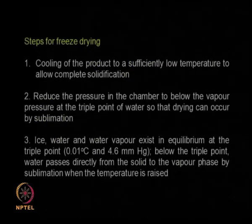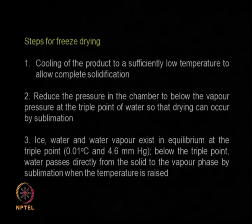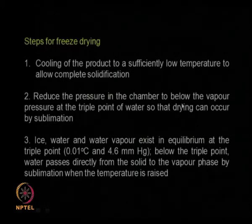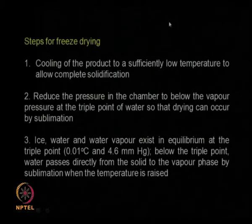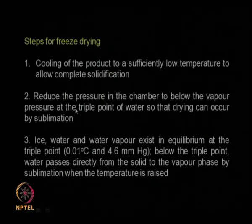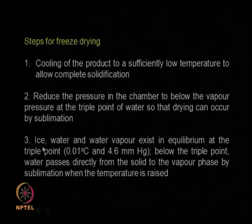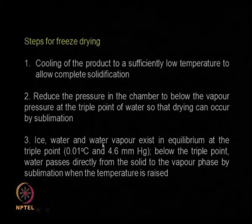The steps in freeze drying: first, you cool the product to a sufficiently low temperature, completely solidifying the material. Then you reduce the pressure in the chamber to below the vapor pressure at the triple point of water so that sublimation occurs — converting solid water into vapor. The triple point is at 0.01 degree centigrade and 4.6 mm mercury. Below this triple point, water passes directly from solid to the vapor phase — sublimation takes place.